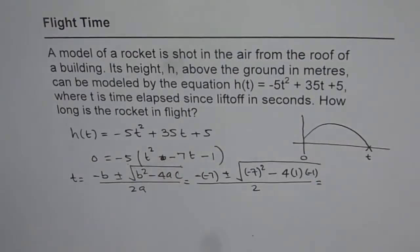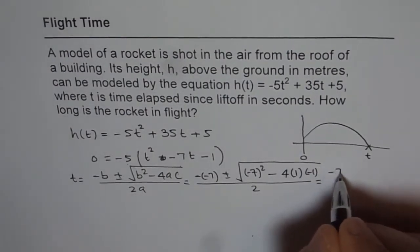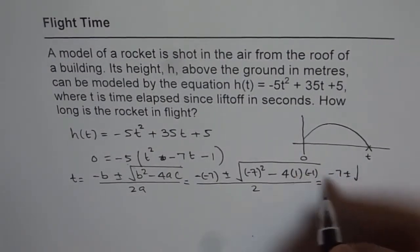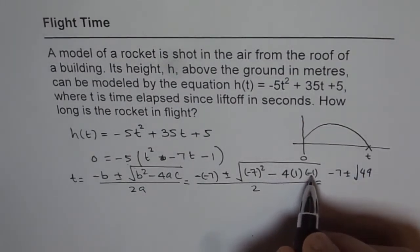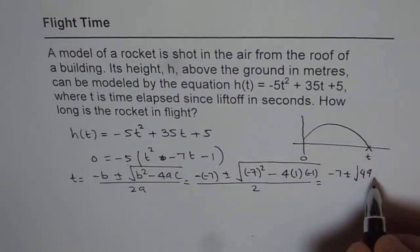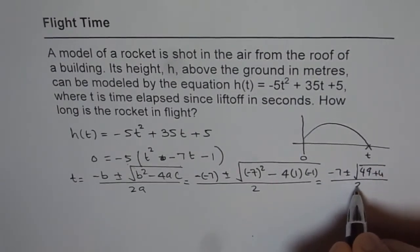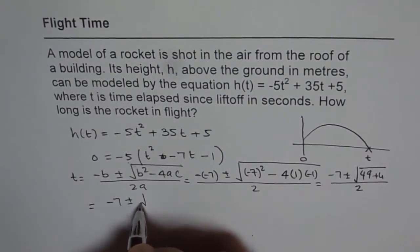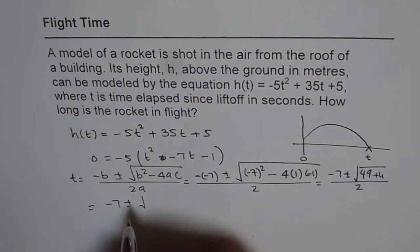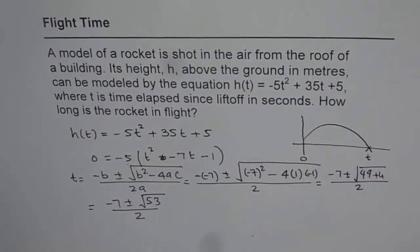So factoring actually helped us. We are working with much smaller numbers. So we have -7 ± √49, and this is 4 times 1, which is 4 and plus sign, square root of all this divided by 2. So it could be written as -7 ± √53 divided by 2. So that is the time when it hits the ground.